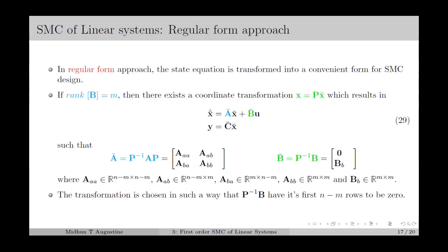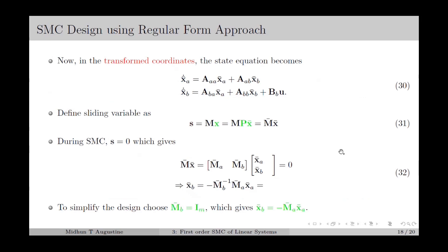In the regular form approach, the state equation is transformed into a convenient form for SMC design. If the rank of matrix B equals m, we use a coordinate transformation to transform the system dynamics as in equation number 29. Here A-bar and B-bar are the transformed matrices. The transformation P is chosen such that the matrix P⁻¹B has the first n minus m rows as zero. This form is called the regular form and is suitable for designing the SMC control law.